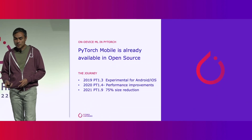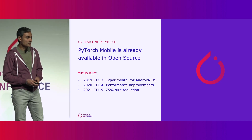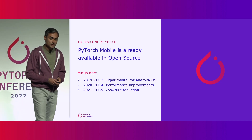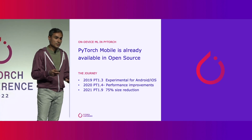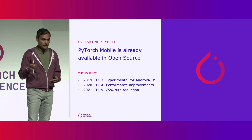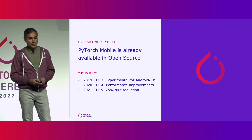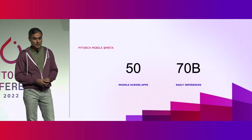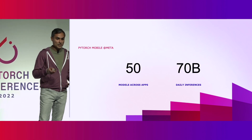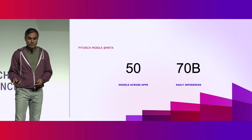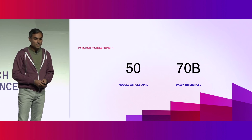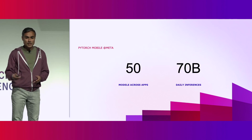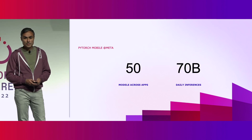In PyTorch, we've been supporting on-device machine learning for some time now. We released PyTorch Mobile three years ago. Since then, we've been doing constant performance upgrades, and lastly we pushed a significant binary size reduction in the runtime. We use it very successfully at Meta — across many applications like Messenger, Facebook, Instagram, and Spark AR. This is about 50 models across these applications that daily perform about 70 billion inferences.